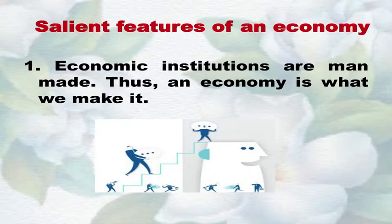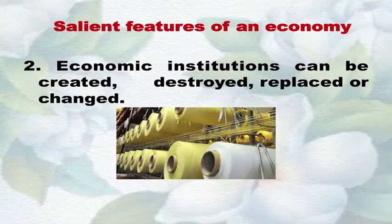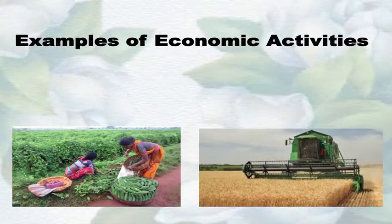Some of the salient features of an economy are as follows. Number one: Economic institutions are man-made; thus, an economy is what we make it. Number two: Economic institutions can be created, destroyed, replaced or changed. For example, capitalism was replaced by communism in 1917 in USSR, and communism was destroyed in 1989 through a series of economic reforms by the former USSR.